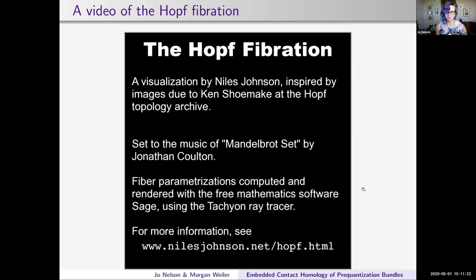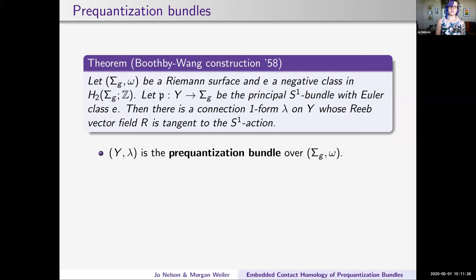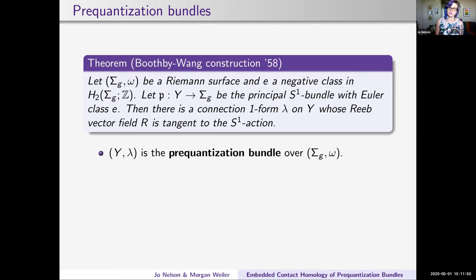The Hopf fibration is an example of a more general construction known as a prequantization bundle. Prequantization bundles are defined in any dimension, but ECH is something we only know how to define for three-manifolds—it's something very special related to Seiberg-Witten theory. For us, the base is going to be a closed Riemann surface, though more generally it could be any closed symplectic manifold. We can take any closed Riemann surface, with omega being any area form, and E is a negative class in H₂. The prequantization bundle is then the principal S¹ bundle over this Riemann surface with Euler class E. If you take the base to be S², depending on the Euler class you pick, you'll either get S³ or lens spaces.